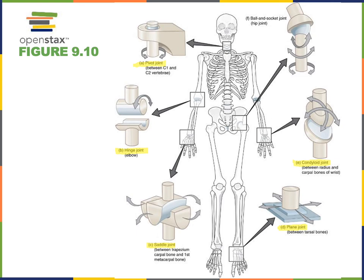Another example of a condyloid joint is the metacarpophalangeal joints — the articulations between the distal ends of the metacarpals and the proximal ends of the proximal phalanges. These joints also enable flexion, extension, abduction, and adduction.